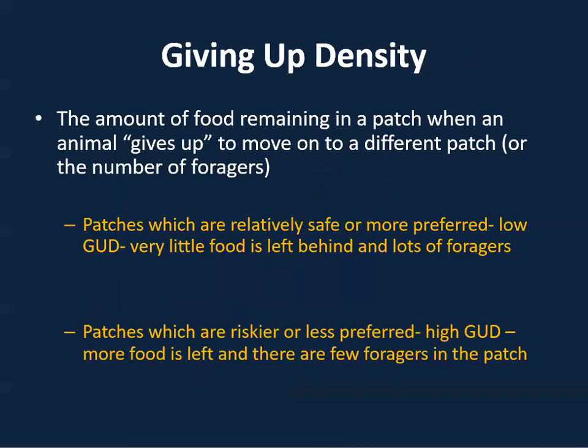Giving up density refers to the amount of food remaining in a patch when an animal gives up to move on to a different patch. Patches that are relatively safe or more preferred will have a lower giving up density, meaning very little food is left behind and there are many foragers. Patches that are riskier or less preferred typically have a higher giving up density, meaning more food is left behind and there are fewer foragers.